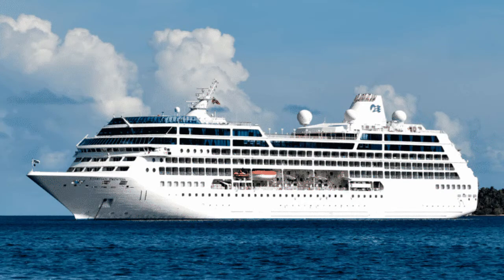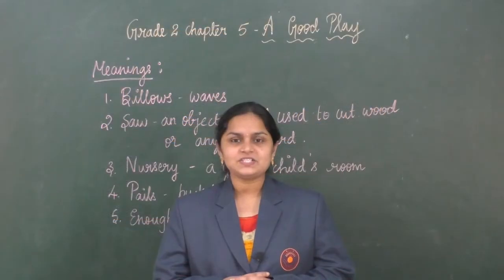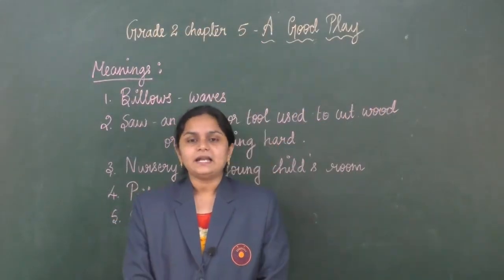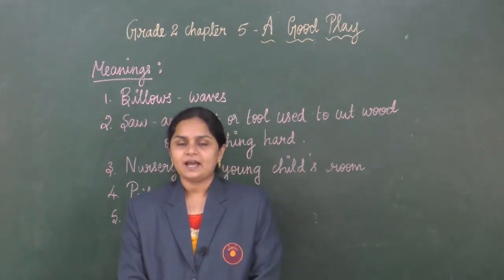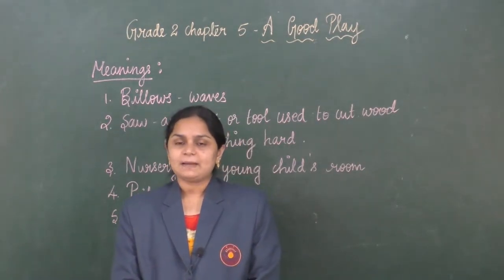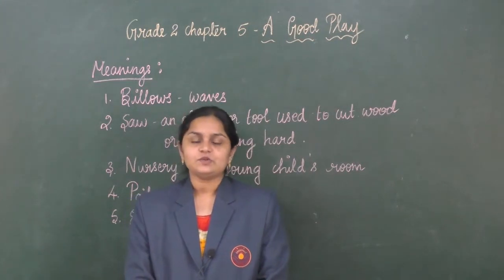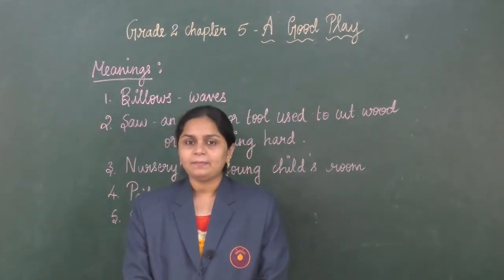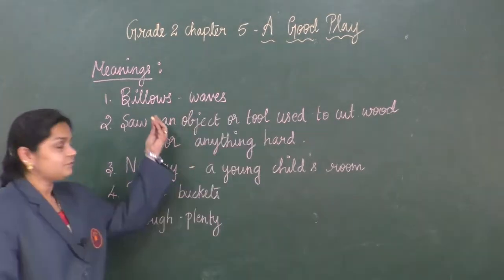What can you see in the picture? A ship, right? In our textbook, chapter number 5, we have a wonderful chapter — a good play. So before we start the mind map, let us learn some meanings and new words.